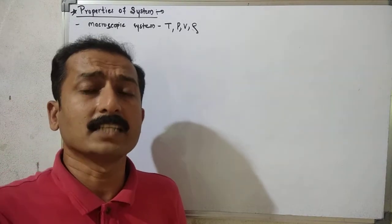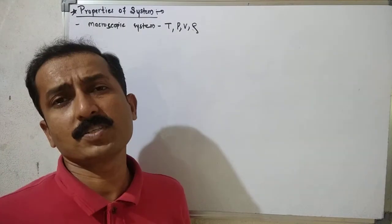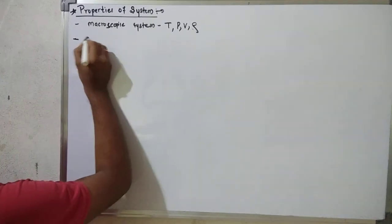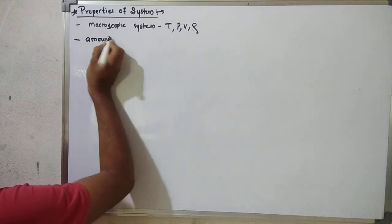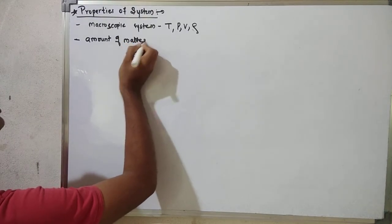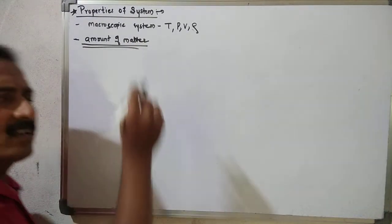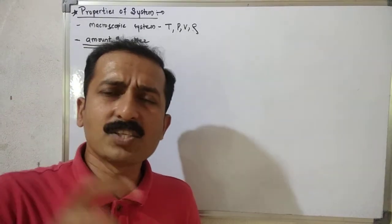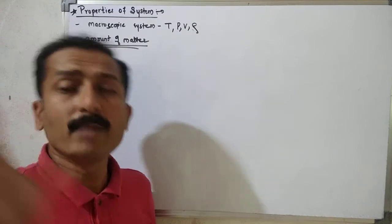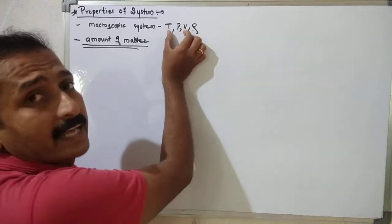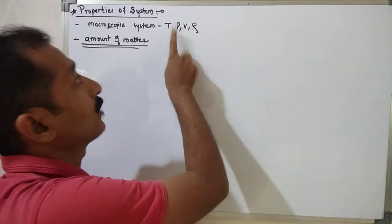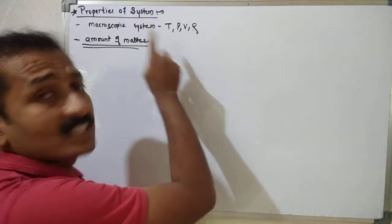There are two properties of system, depending upon the amount of matter used in that system. The property may depend on how much matter is present — that may be temperature, that may be pressure, that may be volume.